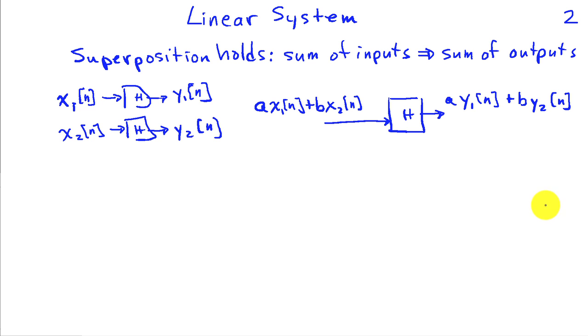A linear system satisfies the principle of superposition. That is, if I take a sum of inputs to the system, I get a sum of outputs. Here I've shown x1 going into the system and giving out y1, x2 going into a system and giving out y2. If this system is linear, then I can take any combination of x1 and x2 with weights a and b, and the output scales as a times y1 plus b times y2.